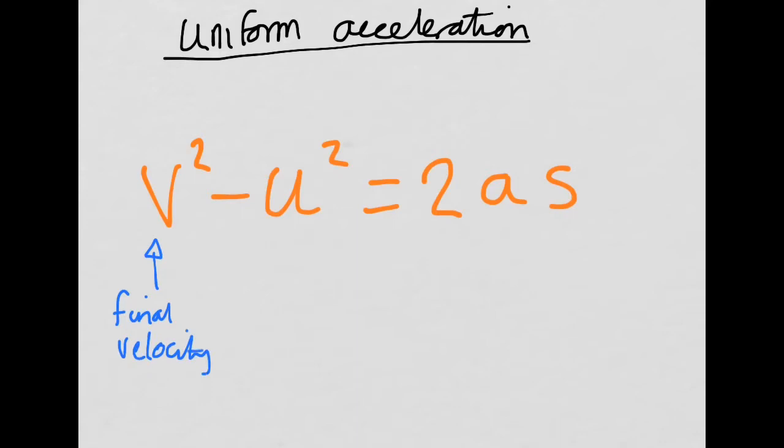So if something starts at a certain velocity, then that's its initial velocity, and that's what we represent with U. U is initial velocity, the starting velocity. And then V is the final velocity, so the velocity after it's accelerated.